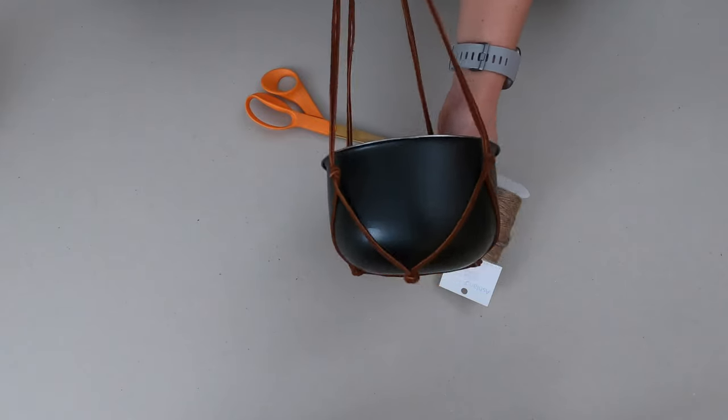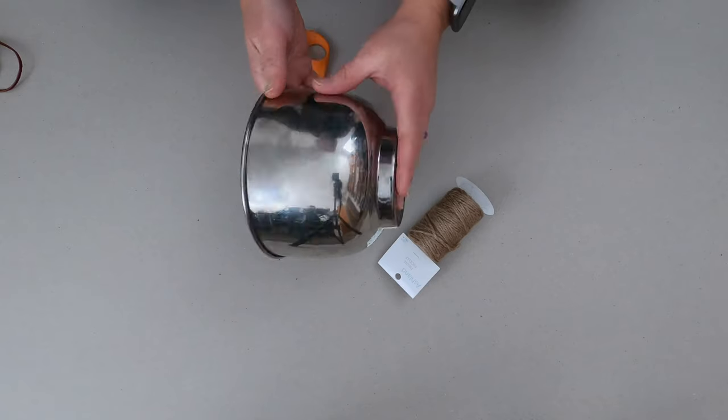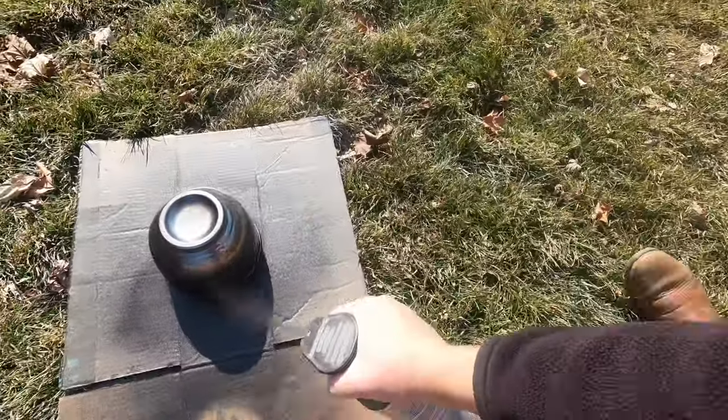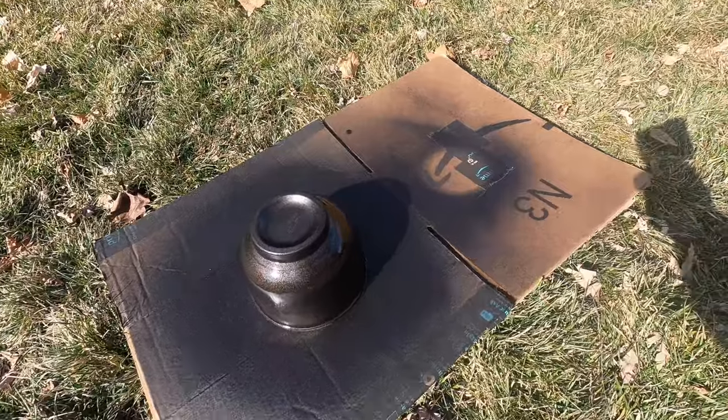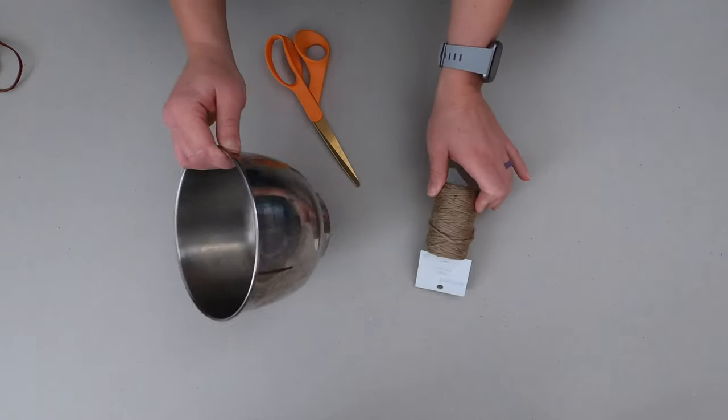Like this one, cleaner look. So that's what I'm going to show you how to make today. You can spray paint the metal first or whatever bowl you're using. But it's snowing outside today so I'm going to do that another day. And I'm just going to start with the rope today.